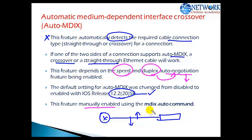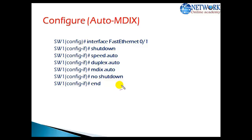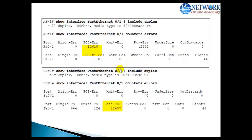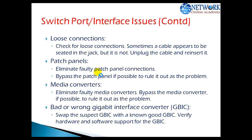This feature must be manually enabled using the 'mdix auto' command. First, on the interface — you can also use the range command — shut the interface down, then enable speed and duplex settings to auto mode, then enable 'mdix auto', and finally use 'no shutdown' to bring the interface back up. This is a commonly used feature in production networks where either cable type can be used for connections.